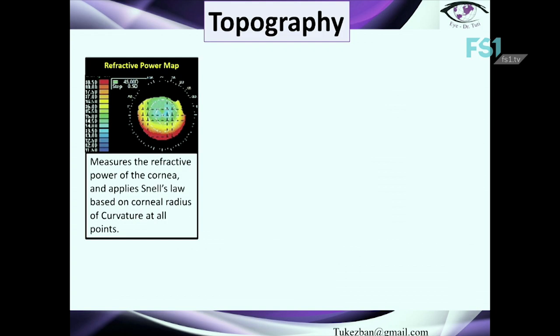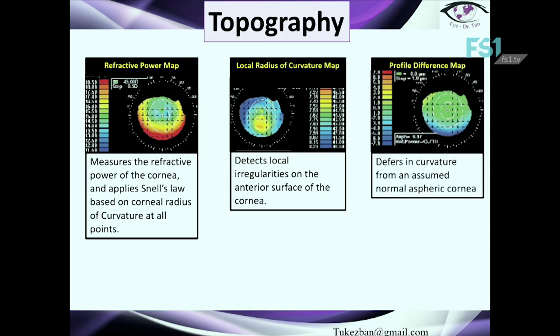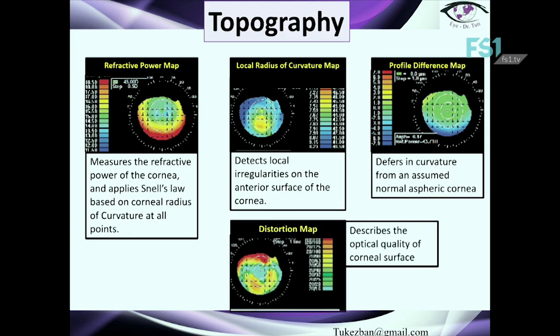Regarding topography maps, there are several types we estimate. The refractive power map gives information about the refractive power of the cornea. The tangential map, also called the local radius of curvature map, is another option. The profile difference map shows the difference in curvature from an assumed normal aspheric cornea — we mainly use this map when comparing pre- and post-operative images. There is also the distortion map, which is not used as frequently.